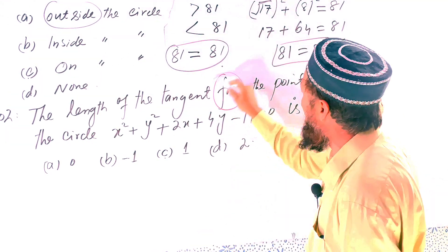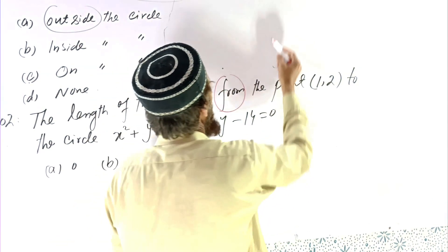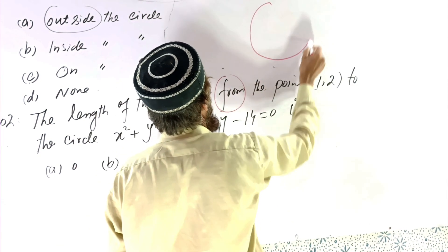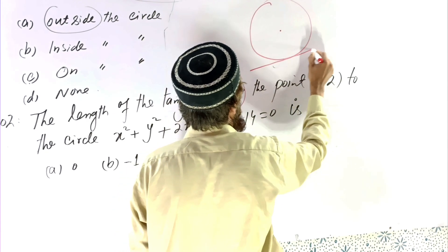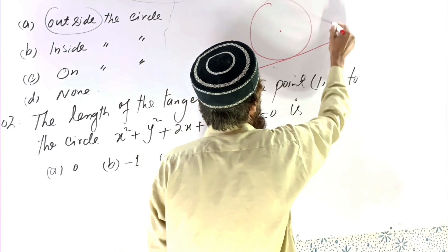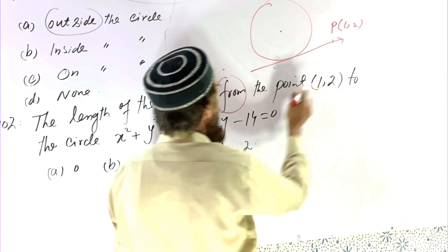From the point, it means that point lies outside. Take this - we have a circle, so that is the center, and that point is the point (1, 2).